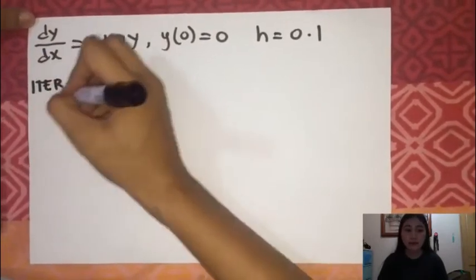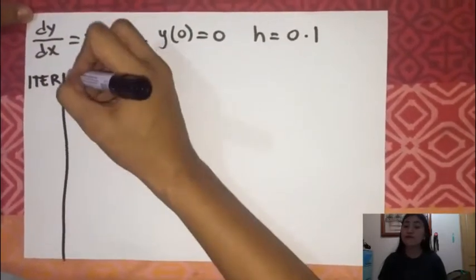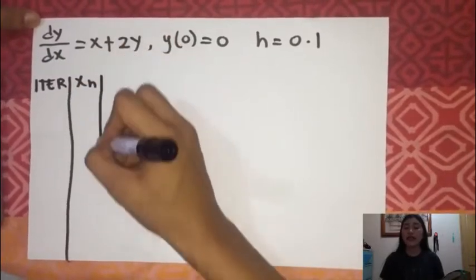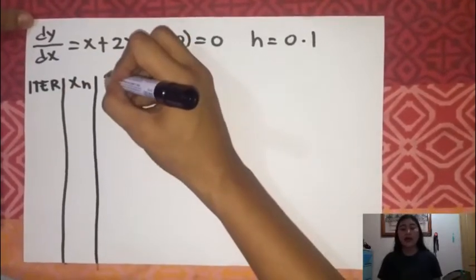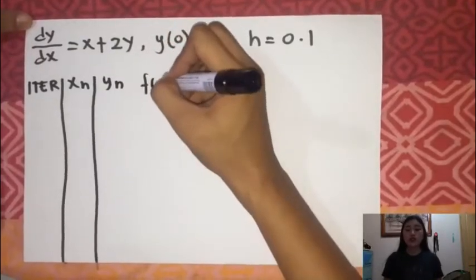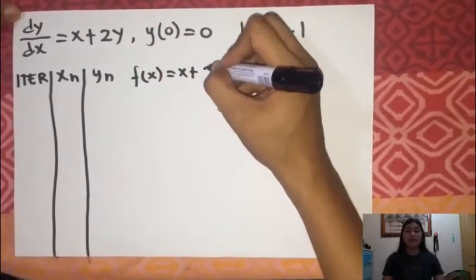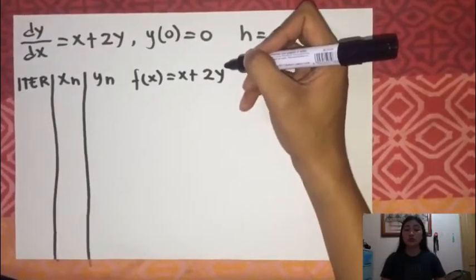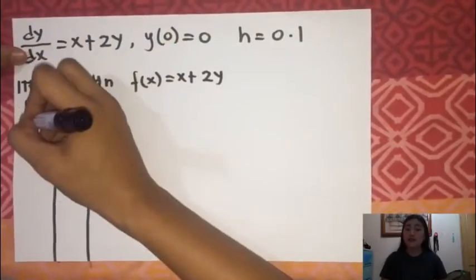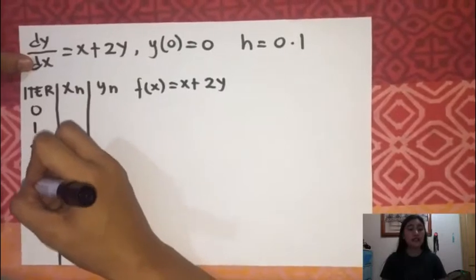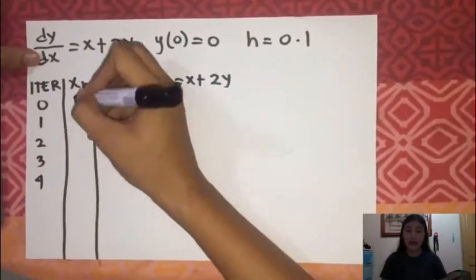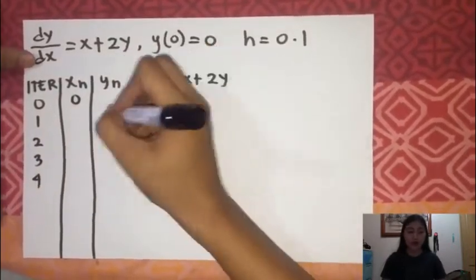Let's start by making a table. First, the iterations, and then xn and yn. We should also write the given equation f of x equals x plus 2y. The iteration will start at 0 and will end at 4.